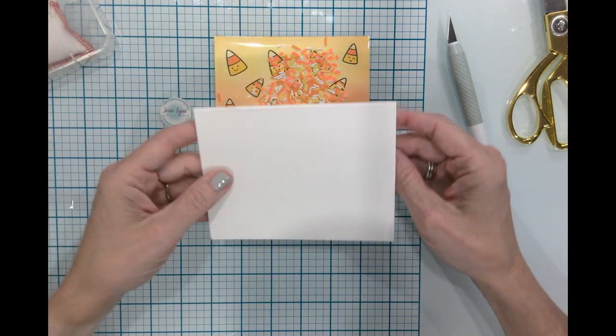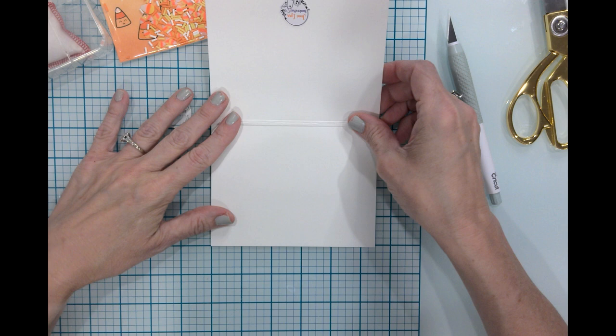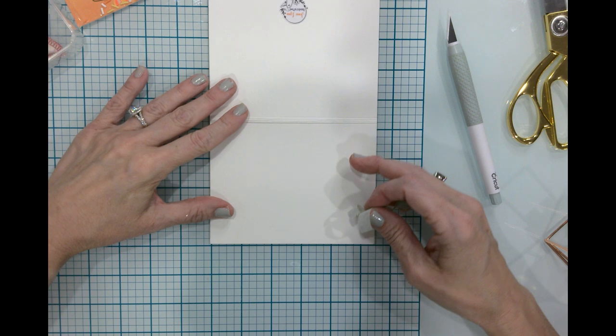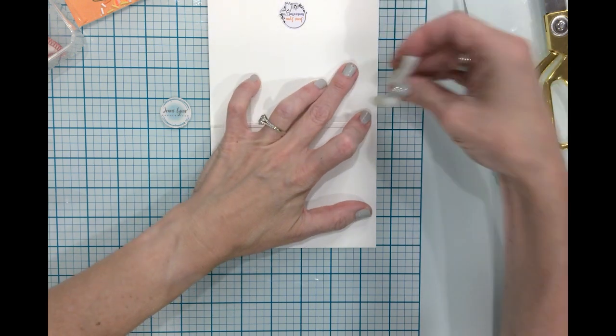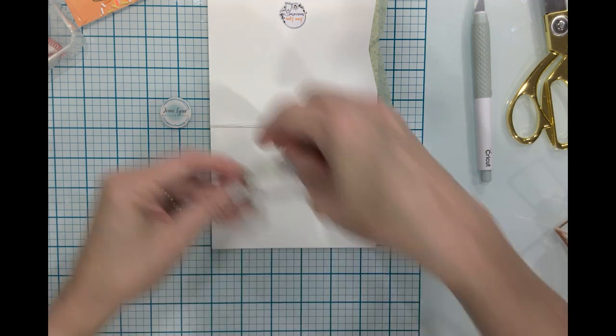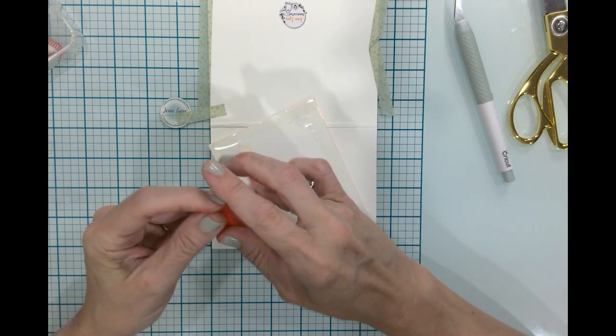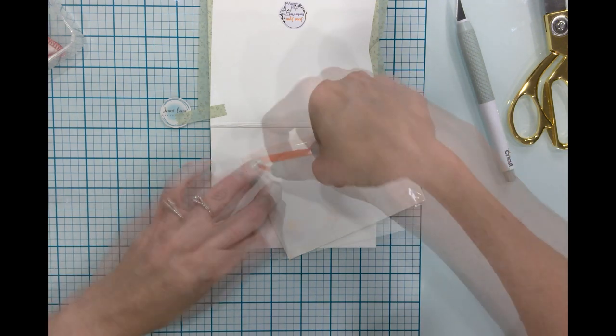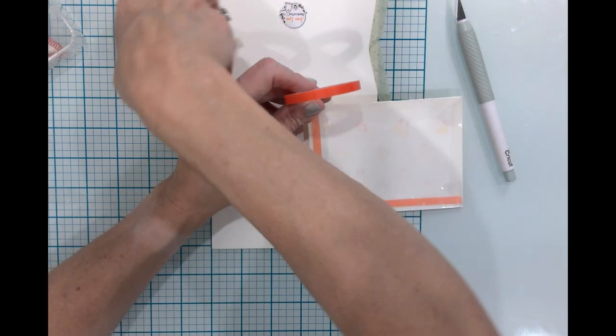So now what I want to do is I want to bring in this panel here, or this base, and I'm going to adhere the shaker to the front of the card. And then we will finish out the embellishment on the front of the card or the sentiment. So now what I'm going to do is I'm going to use a little bit more of this red line tape, and I'm basically going to go around all four sides again, just like I did before. And then we will get this onto the card base.